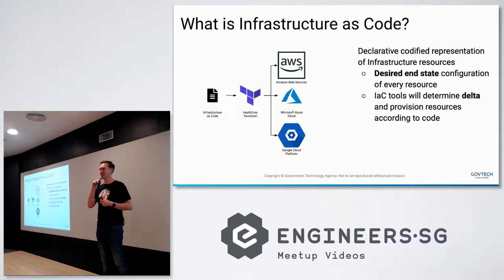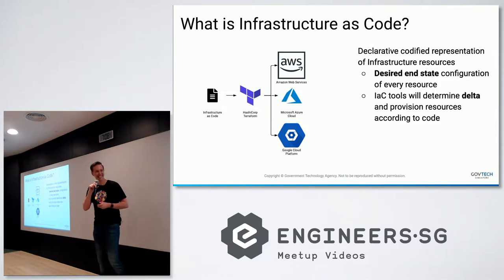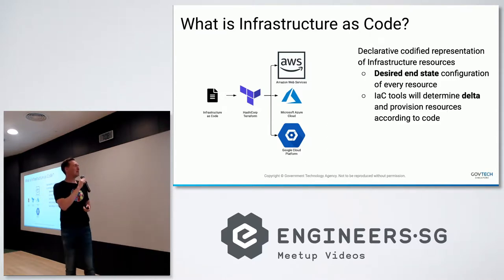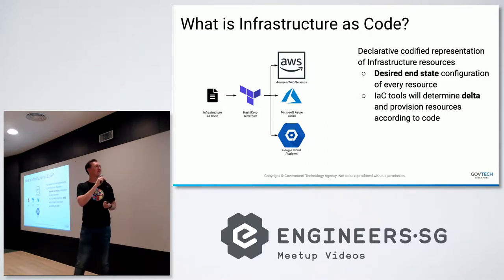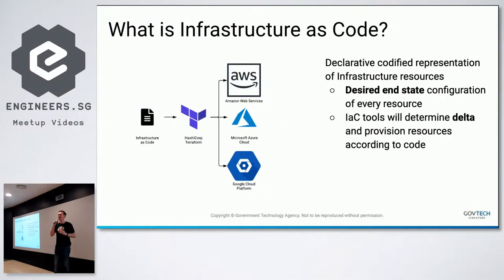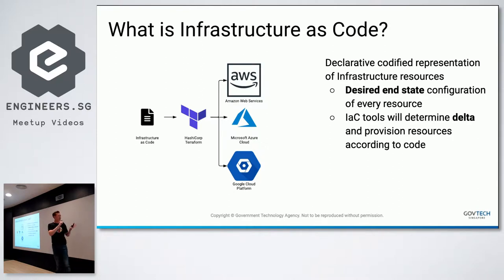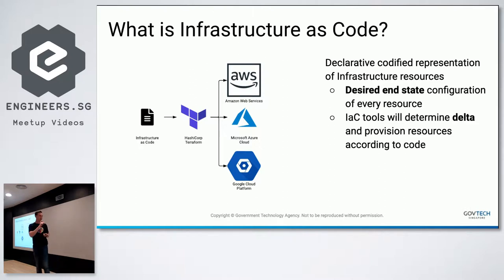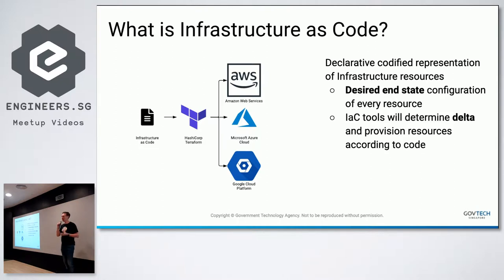How many people are in the wrong talk? Infrastructure as code is really about codifying the representation of infrastructure, and it's something that is really enabled and beneficial for the cloud providers that we're moving into. It's not necessarily restricted to the cloud.